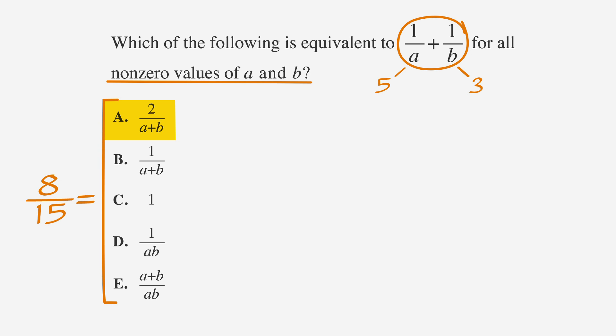Answer choice A, 2 over A plus B, becomes 2 over 5 plus 3, or 2 over 8. We don't need a calculator to simplify this one. Dividing by 2, we get 1 fourth. This doesn't match our answer of 8 over 15. Let's cross out answer choice A. Answer choice C, 1, clearly doesn't match our number, so we can cross that off without doing any math.